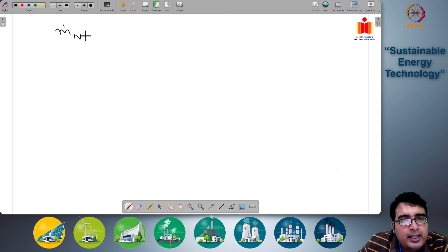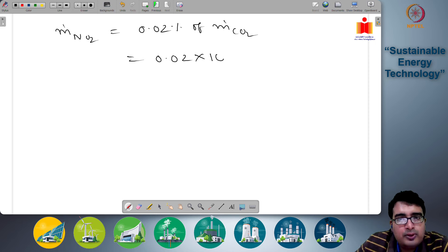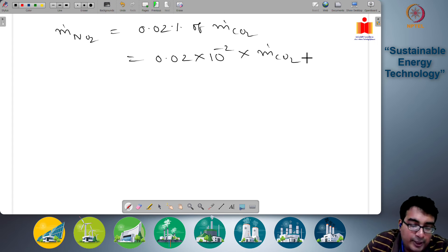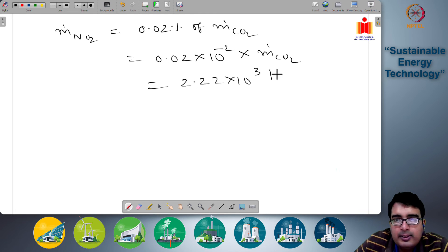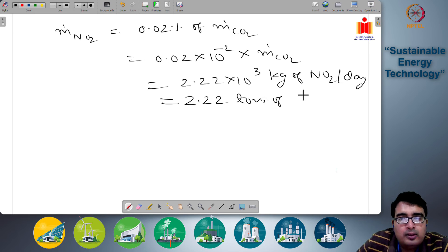Now m dot NO2 is 0.02% of m dot CO2, that is 0.02 × 10^-2 times m dot CO2. We have already evaluated m dot CO2, so we can just multiply all of this to get 2.22 × 10^3 kg of NO2 per day, or 2.22 tons of NO2 is being emitted per day.